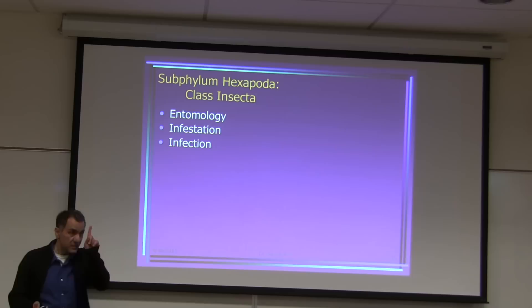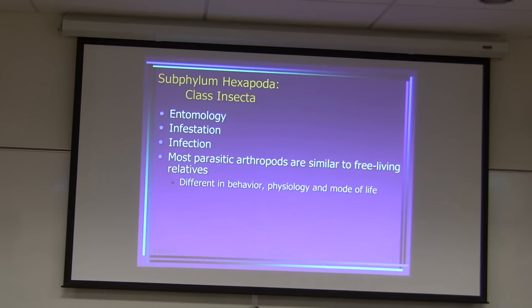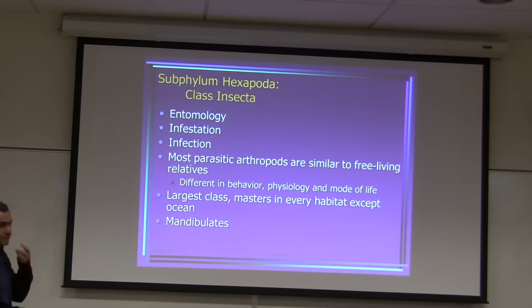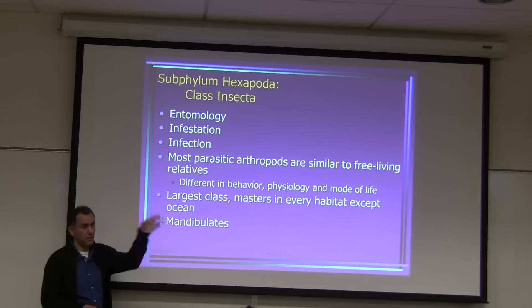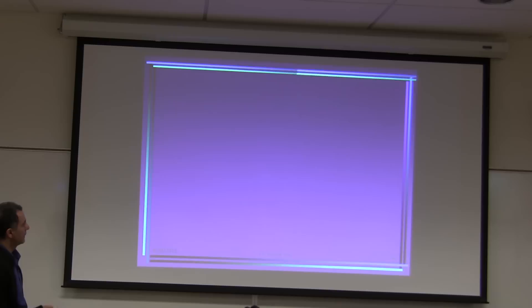Most parasitic arthropods are similar to their free-living relatives but differ in behavior, physiology, and mode of life. Insects are the largest class in every habitat except the ocean. Mouth parts include chewing, sucking, and sponging. The body is divided into head, thorax, and abdomen, with two compound eyes and usually three simple eyes.